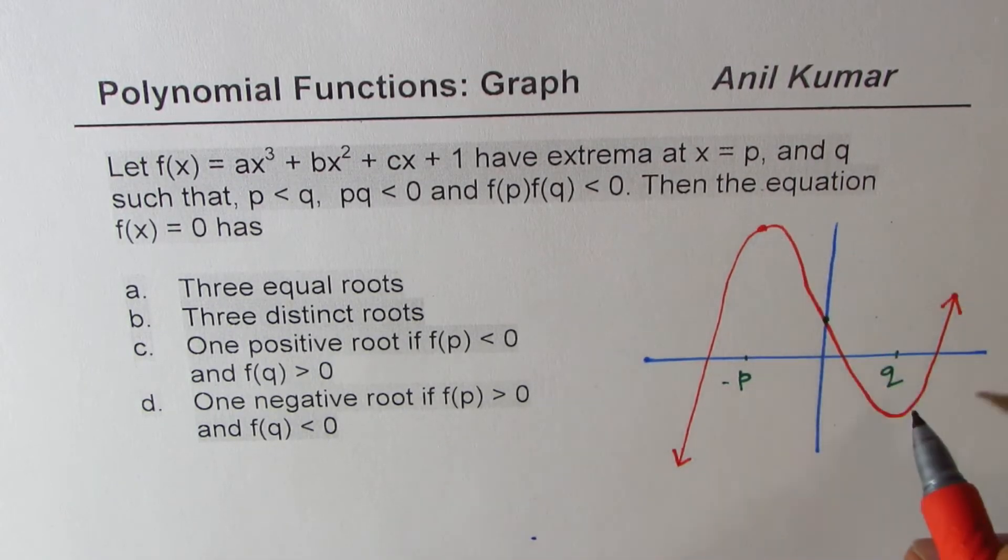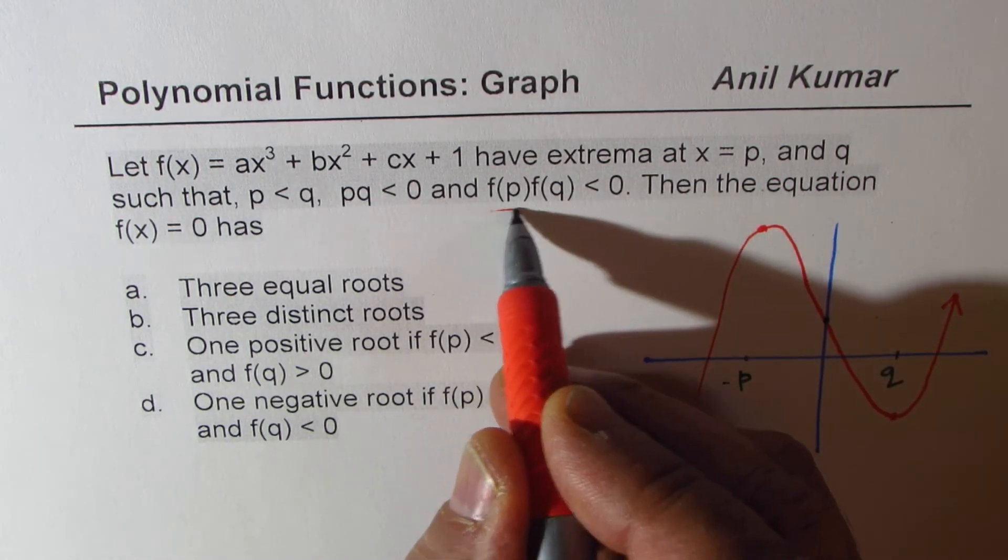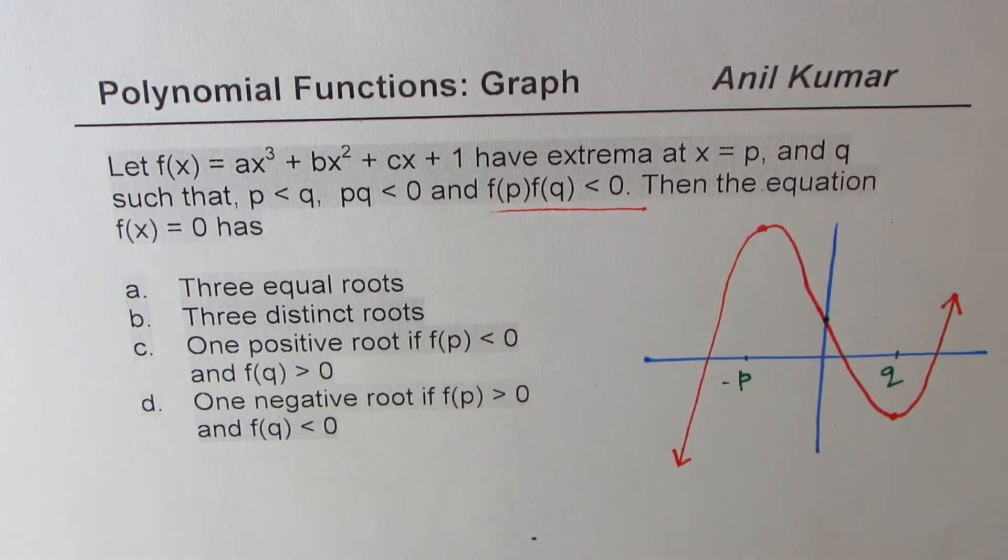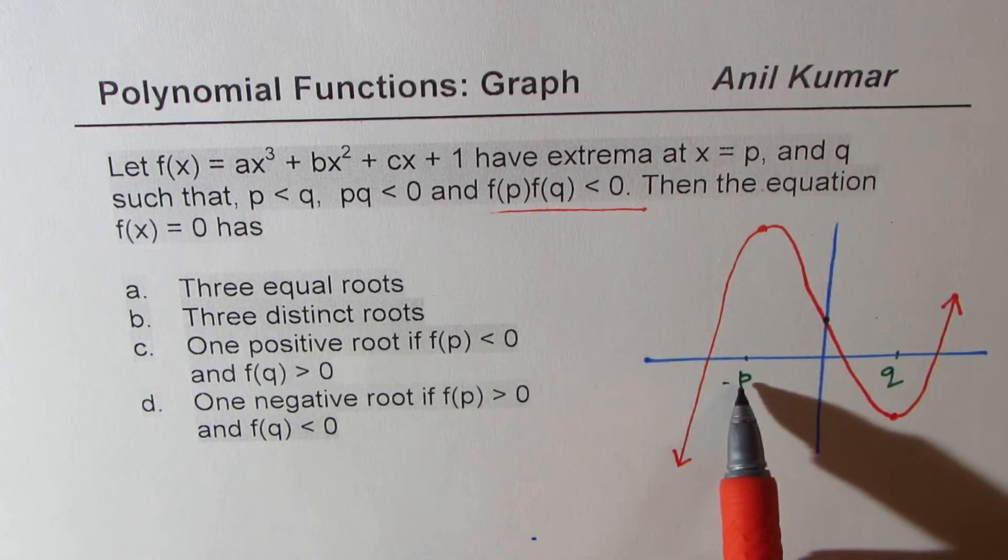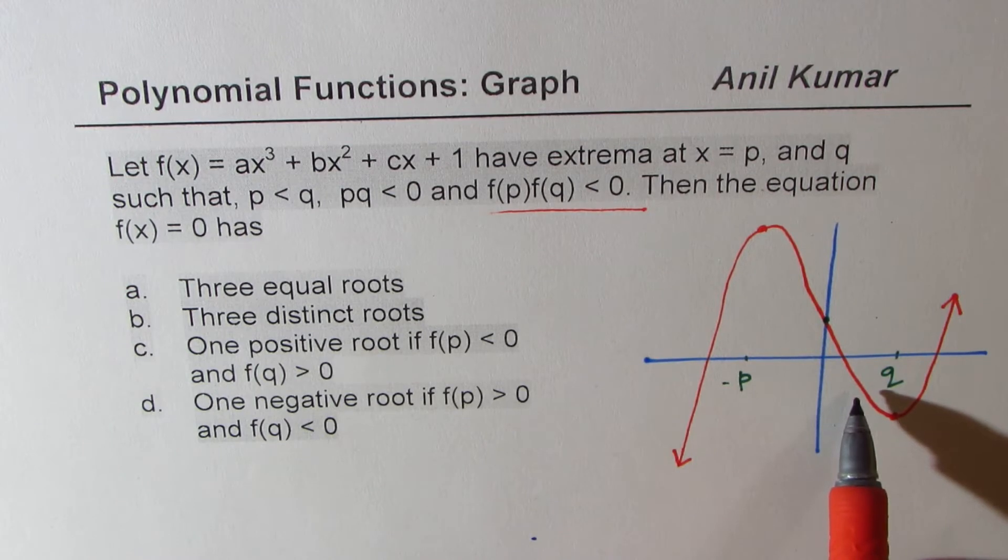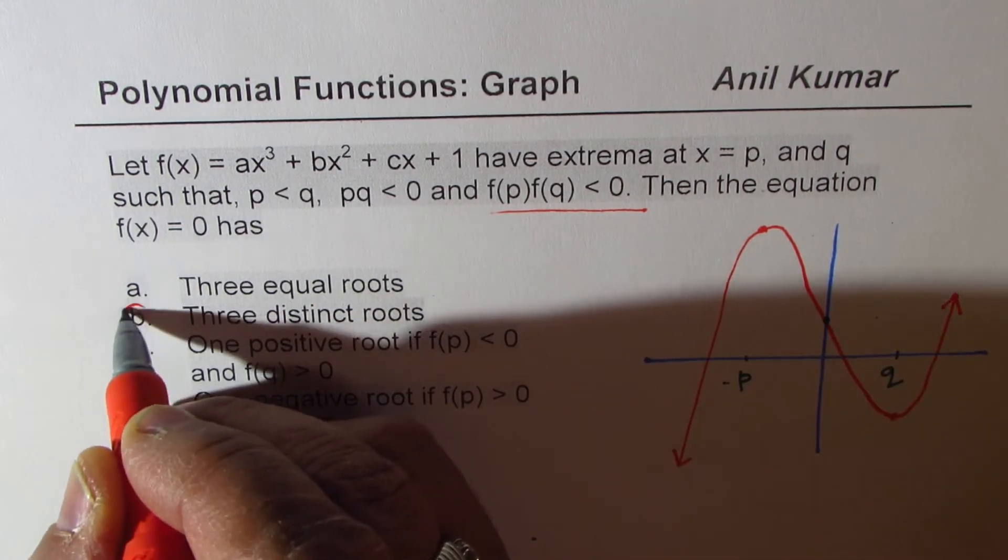So at p, we have a maximum, at q, we have a minimum. One is positive, one is negative. So their product will be less than 0. P and q, p is on the left side, so p is lesser than q. So we get this scenario. So if I look at it, we see clearly three distinct roots. So this is correct answer.